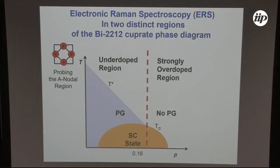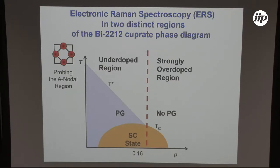In order to answer this question, we have performed electronic Raman spectroscopy in two distinct regions of the Bismuth-2212 cuprate phase diagram — first in the strongly overdoped regime where there is no pseudogap, and where the pseudogap develops below the pseudogap temperature. Because ARPES shows the pseudogap develops mostly along the principal axis of the Brillouin zone in the antinodal region, we are probing exclusively the antinodal region.